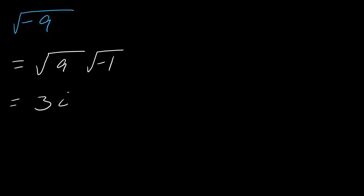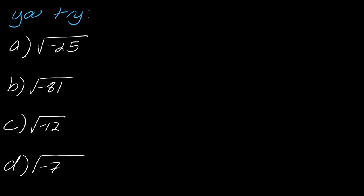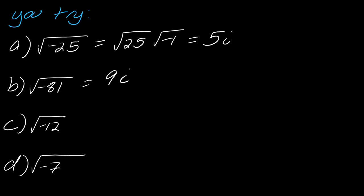That's all you have to do — it's just a slight tweak. Go ahead and pause the video and try the examples. So to start, using that same reasoning: the square root of negative 25 is the square root of 25 times the square root of negative one, which is just 5i. This next one would be 9i.